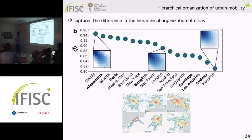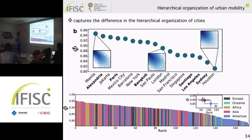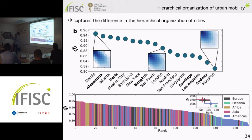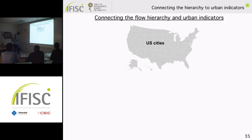Thanks to the nice coverage of the data, we computed this flow hierarchy in around 200 cities worldwide. We find a continental trend: cities in yellow and red — African and Asian cities — are among the most hierarchical; European cities are in the middle; and American and Oceanian cities are among the least hierarchical. To summarize, I have proposed a metric to quantify hierarchical mobility, and cities show a wide range of hierarchical structure.